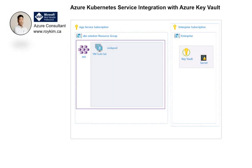Hey everyone. I just want to go through Azure Kubernetes Service integration with Azure Key Vault. I want to go through a scenario where we want to have a secret in Azure Key Vault in this enterprise resource group. We want to bring in that secret into a Kubernetes pod so it can be accessed by a running application.